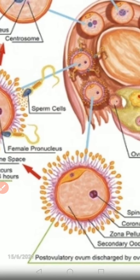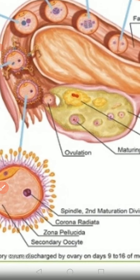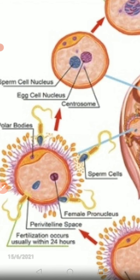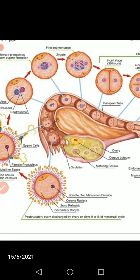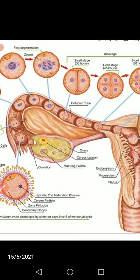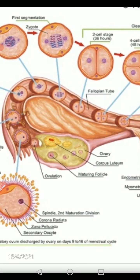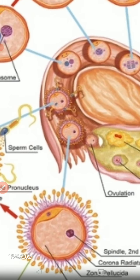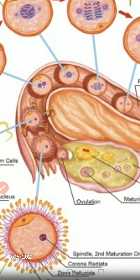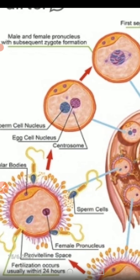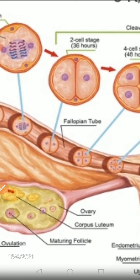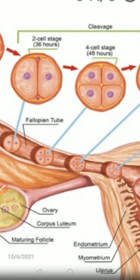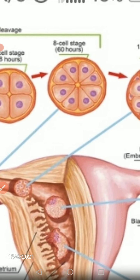The first cleavage produces two identical cells called blastomeres. These two cells then produce four cells, and four cells produce eight cells. You can see the two-cell stage here, then four cells — this is the cleavage of the blastomere — then the eight-cell stage is formed.